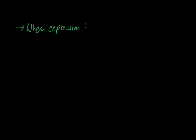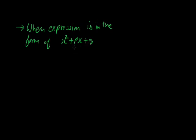Hello students, myself Ashish Chawla and today we continue the topic factorization. The next type of factorization is when the expression is in the form of x squared plus px plus q. The process is that we have to divide the coefficient of x, that is p, into two numbers n1 and n2, such that their sum equals p and their product equals the constant term, that is q.